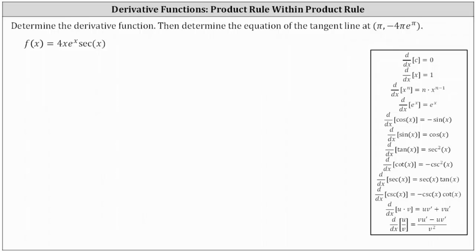We're asked to determine the derivative function, then determine the equation of the tangent line at the point pi comma negative four pi times e to the power of pi.